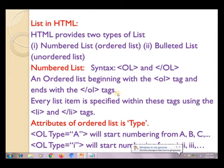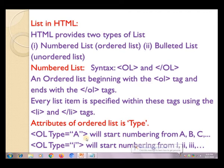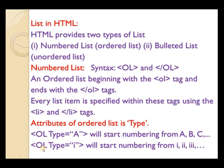The syntax for ordered list begins with the ol tag and ends with the ol tag. Every list item is specified within these tags using the li and /li tag. The attribute of ordered list is 'type'. If we want list items as A, B, C, then we write ol type equal to A.